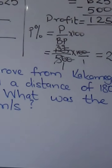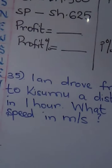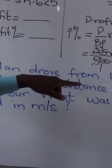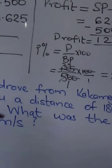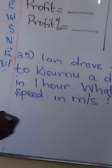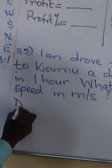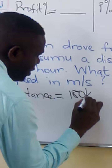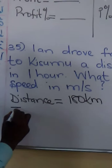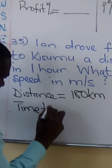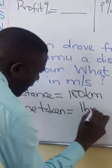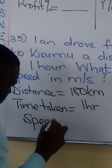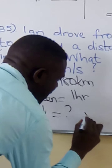Now let's go to the next question, number 35. Ian drove from Kakamega to Kisumu, a distance of 180 kilometers in one hour. What was the speed in meters per second? We are given the distance — 180 kilometers — and the time taken, which is one hour. We are asked to find the speed in meters per second.